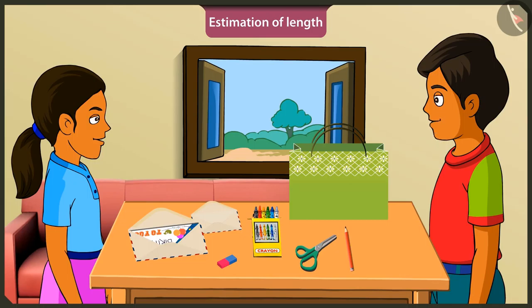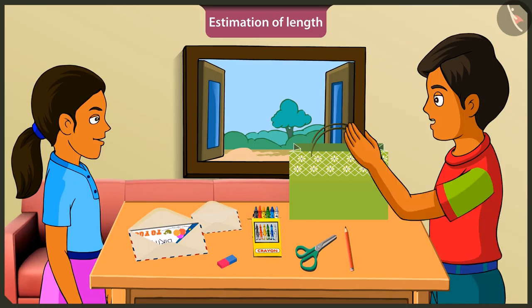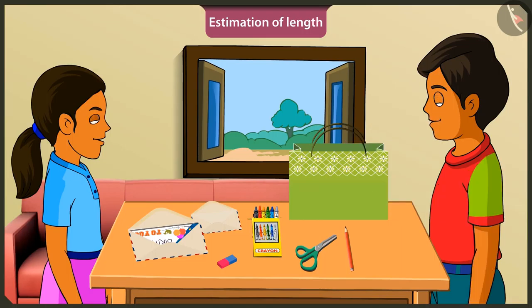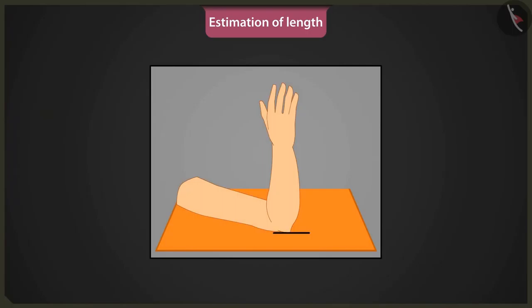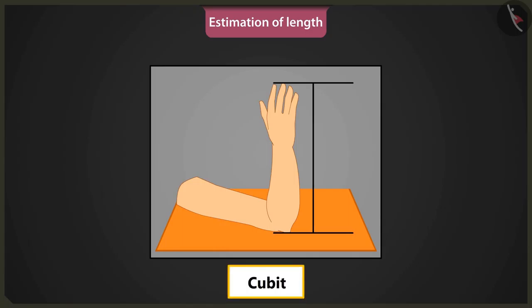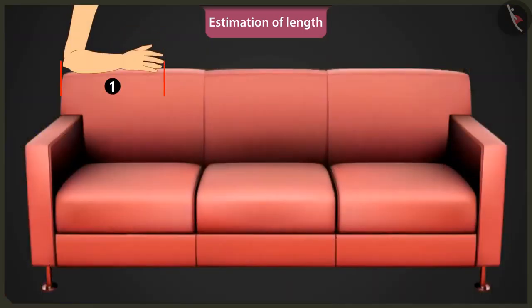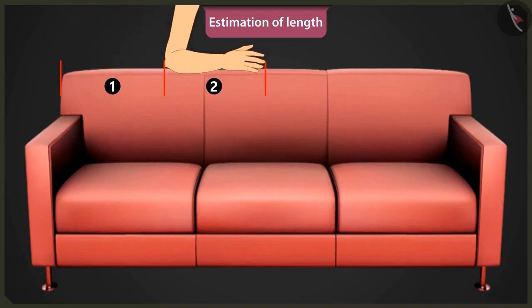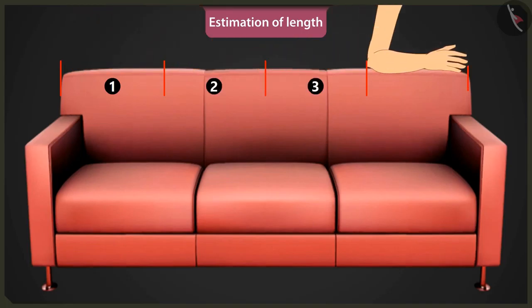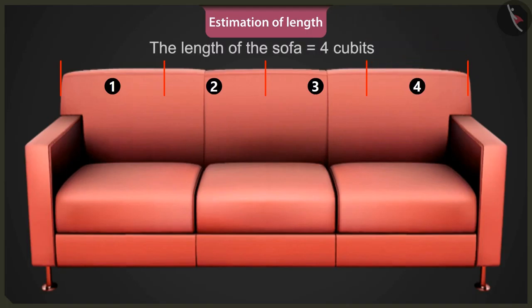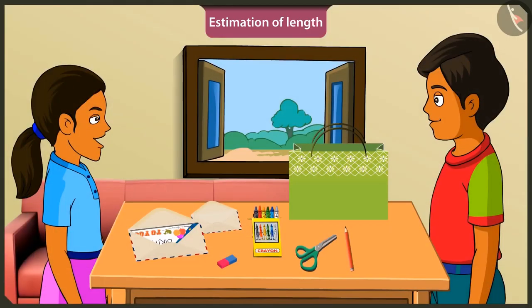Now I will teach you how to measure by making your arm length a unit. The distance from the elbow to the tip of the middle finger is called the length of the arm, or the length of a cubit. Can we use it to measure this sofa? Yes. This is one arm's length, two arms, three arms, four arms length — so the length of this sofa is equal to four cubits. Wow, brother, you even measured the sofa!